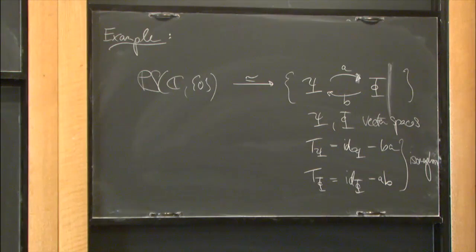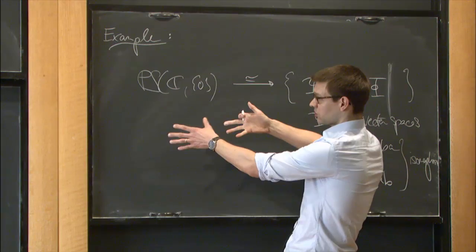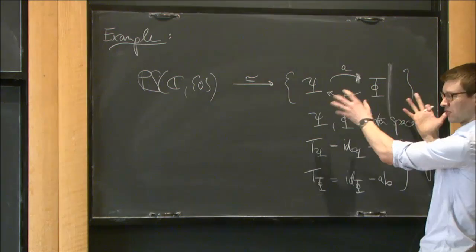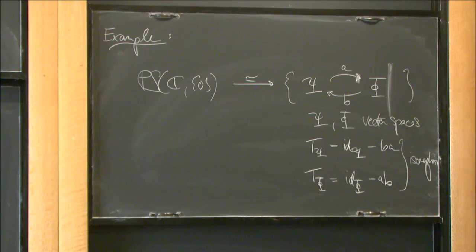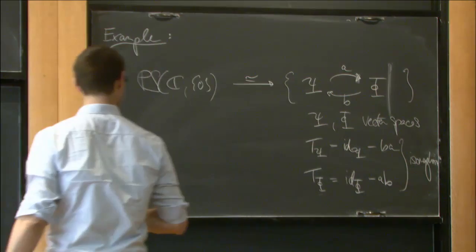I just want to exhibit the general feature that I can explain this category in completely elementary terms, just in terms of linear algebraic data, without reference to any fancy gadgets like the derived category, t-structures, and so on. And there are no gradings on this right-hand side.